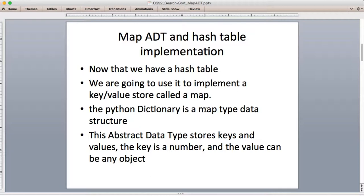The only difference between what Python does is our keys will have to be integers because that's the type of hash function we're using. So we're going to create an abstract data type called map that stores keys and values. The key is going to be a number, and the value can be any type of object at all.